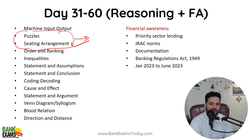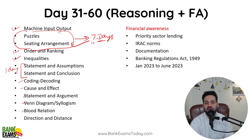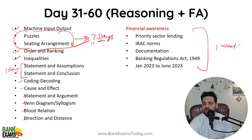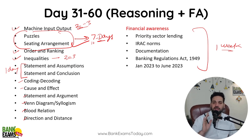Spend 7 to 10 days on puzzles and sitting arrangements. For remaining topics — machine input-output, inequalities, statement and assumptions, statement and conclusion, coding-decoding, cause and effect, statement and argument, syllogism, blood relations, direction sense test — one day each is sufficient. You may need 2-3 days for some topics like inequalities or machine input-output, so make a Google Sheet and modify your plan according to your needs.